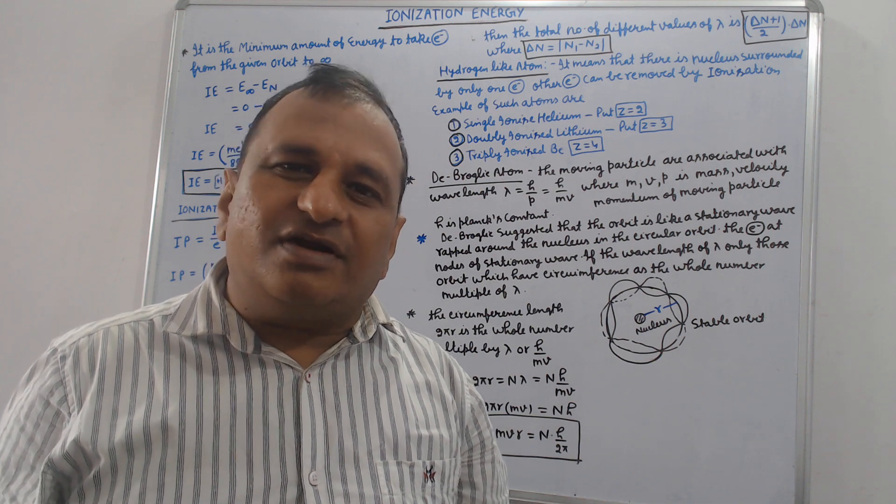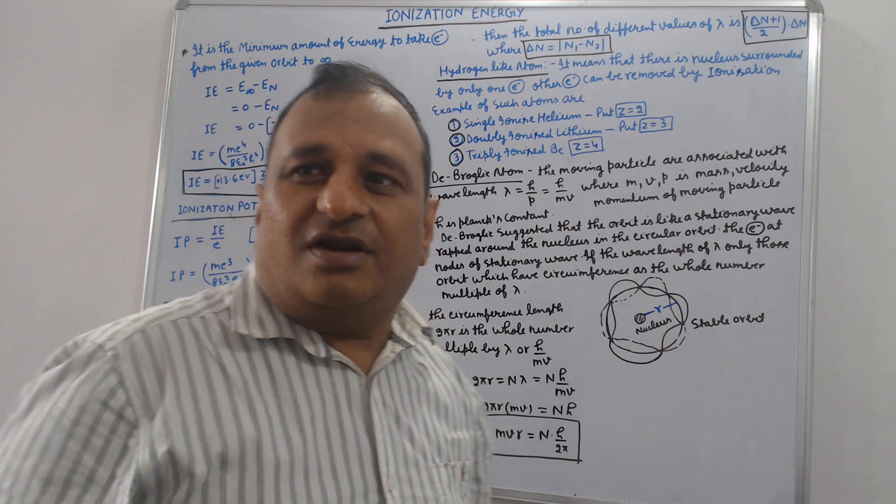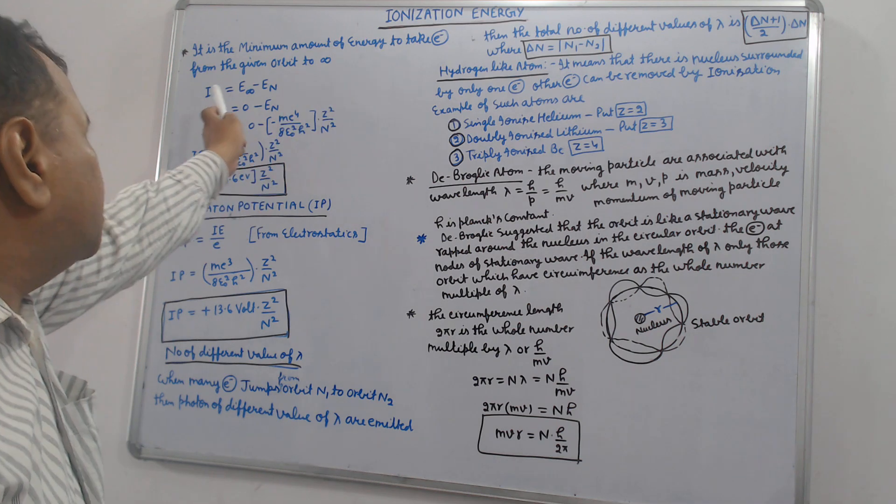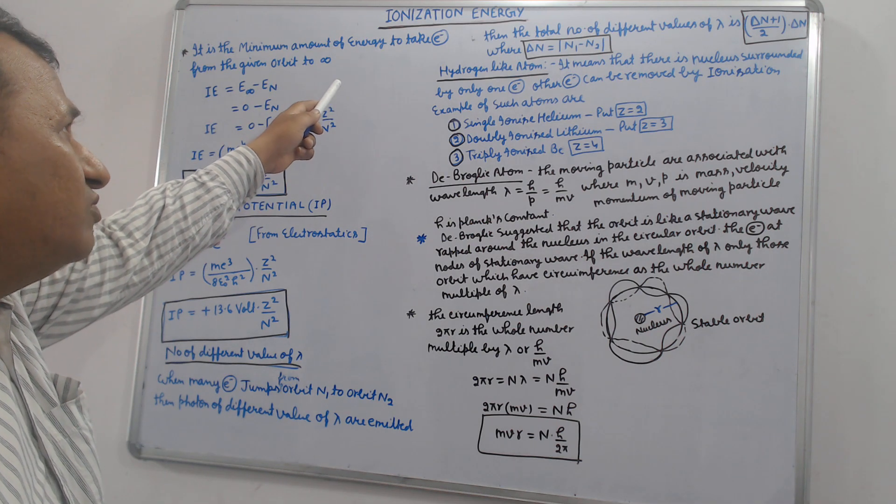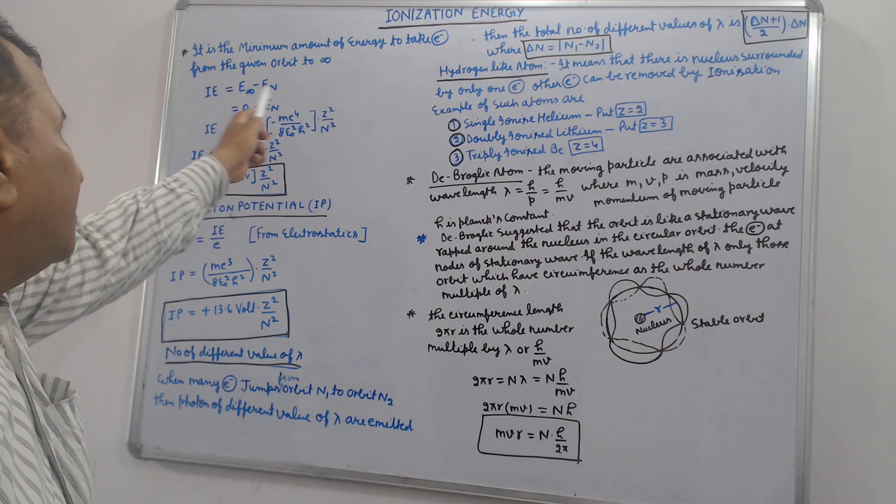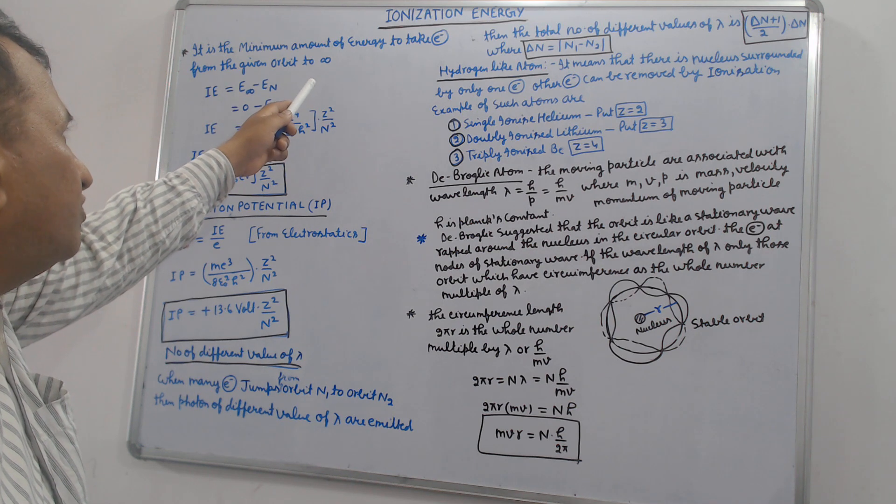Today's topic is ionization energy, ionization potential. Ionization energy is the minimum amount of energy to take an electron from the given orbit to infinity.